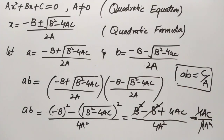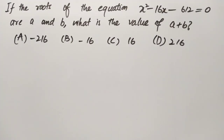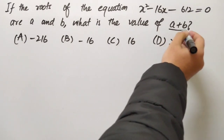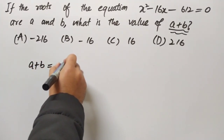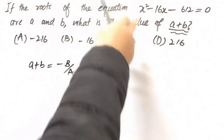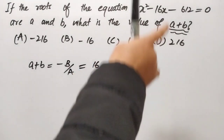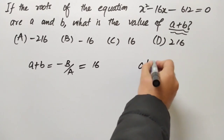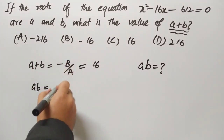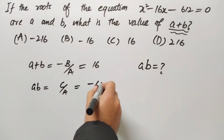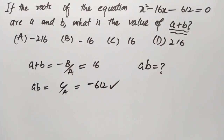So c/a is the formula for the product of roots. Now solving our question: we need to find a + b, and we know a + b = −b/a, so putting in the values we get 16. If the same question asks for the product ab, we write ab = c/a, and c = −612, so that is the answer. We don't need to find the individual roots — we can just use a + b = −b/a or ab = c/a directly. Please like the video, share it, and don't forget to subscribe to my channel. Thank you.